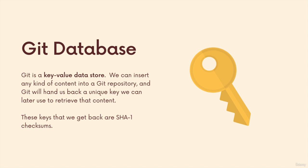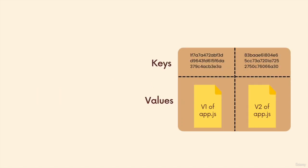Git is going to hand us back a unique key that we can then later use to retrieve that content. Like when you go to a bar or a club or a concert venue and there's a coat check — they take your coat, they give you a unique key that corresponds to your coat, and then later on you go back and say, hey, here's my key, give me back my coat, please. So the keys that we get back in Git are SHA1 checksums, the output of the SHA1 hashing function.